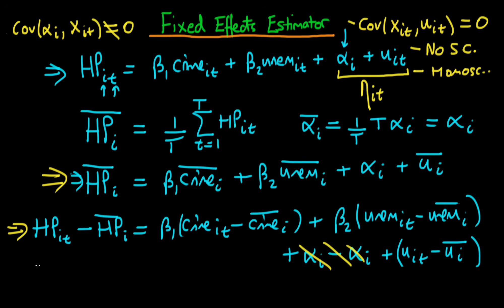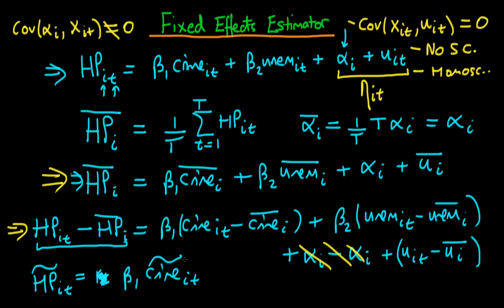This is often written in another form: if we define a variable called the time-demeaned value of house prices in city i at time t — denoted with a tilde — then we can rewrite the whole equation as the time-demeaned house price equals beta_1 times the time-demeaned crime rate (crime-tilde_it), plus beta_2 times the time-demeaned unemployment rate at city i at time t, plus the time-demeaned idiosyncratic error. The tilde means that variable in levels minus the time mean of that variable.